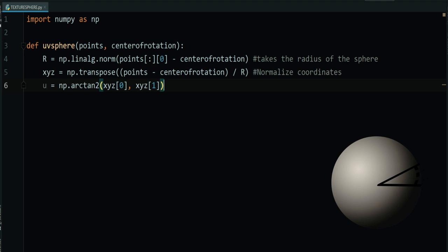That angle ranges between minus pi and plus pi. If we divide it by 2 pi and then add a 0.5 quantity, we obtain a U variable that changes from 0 to 1.